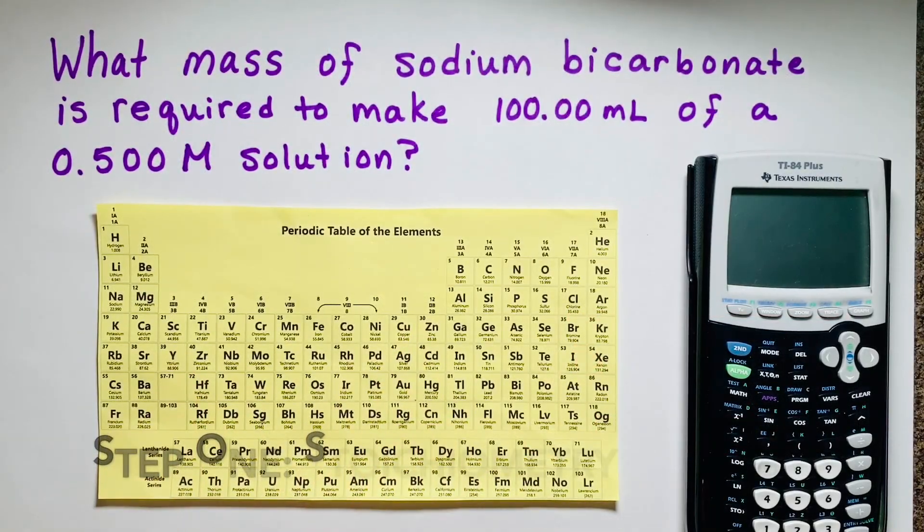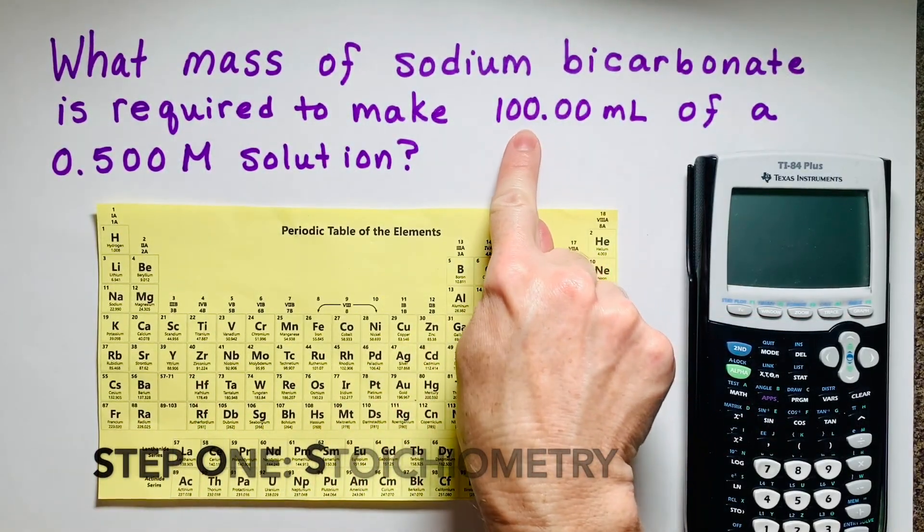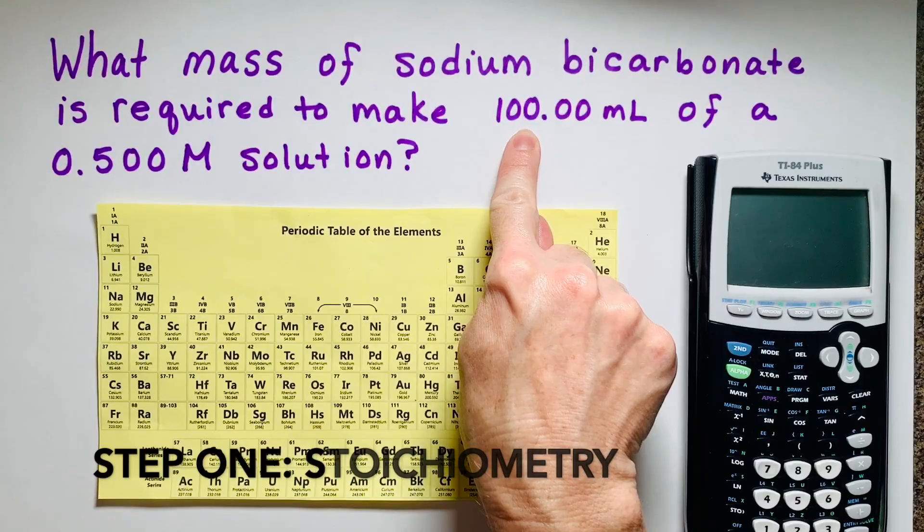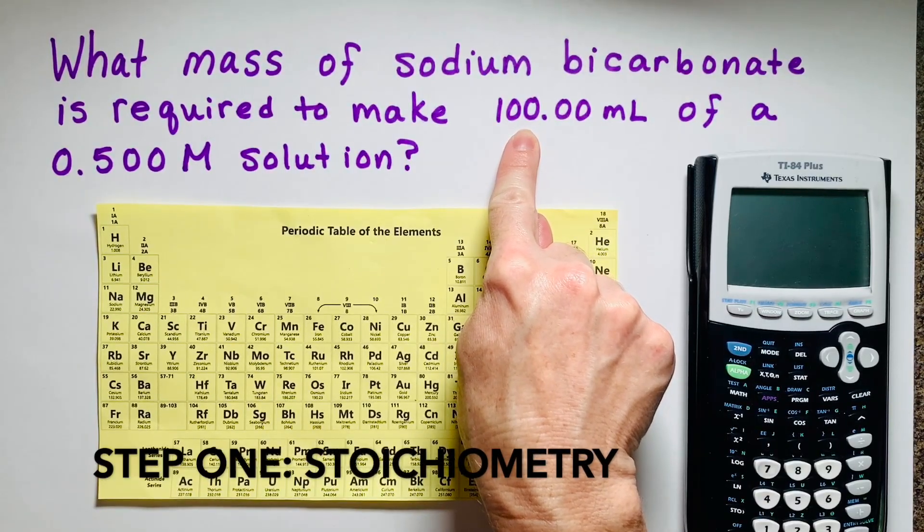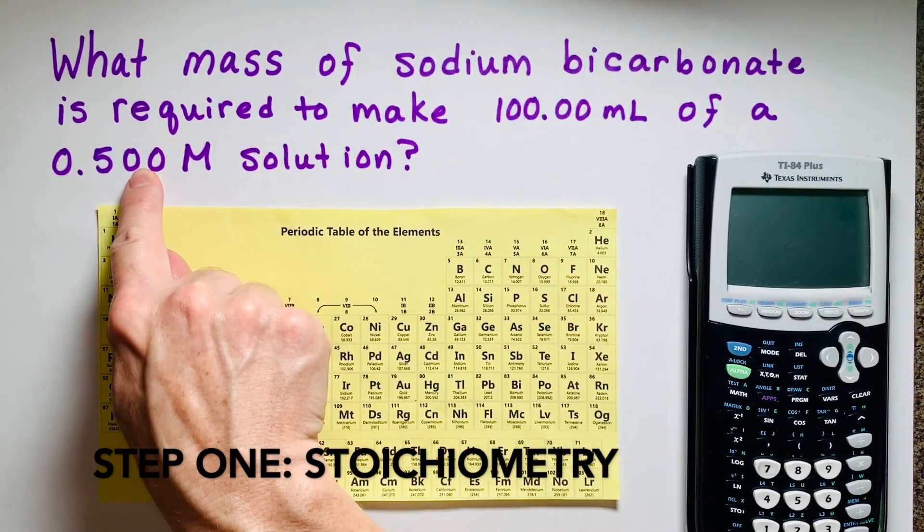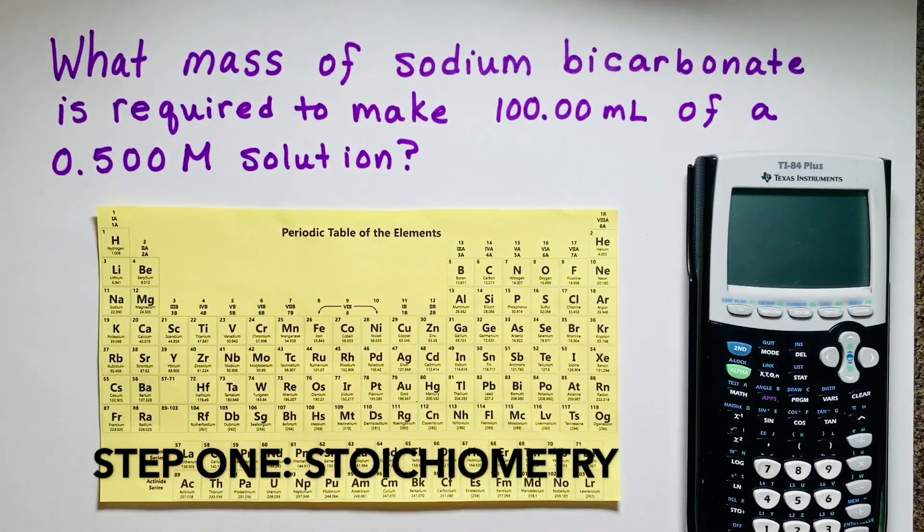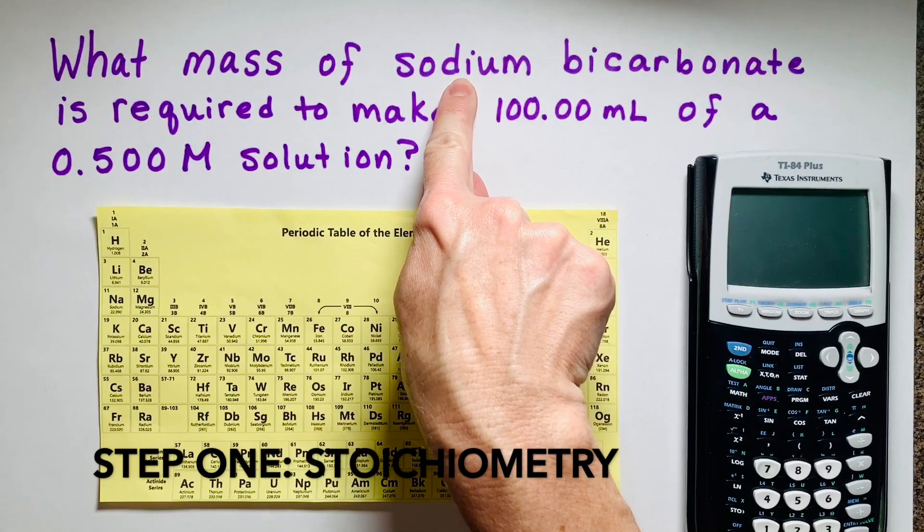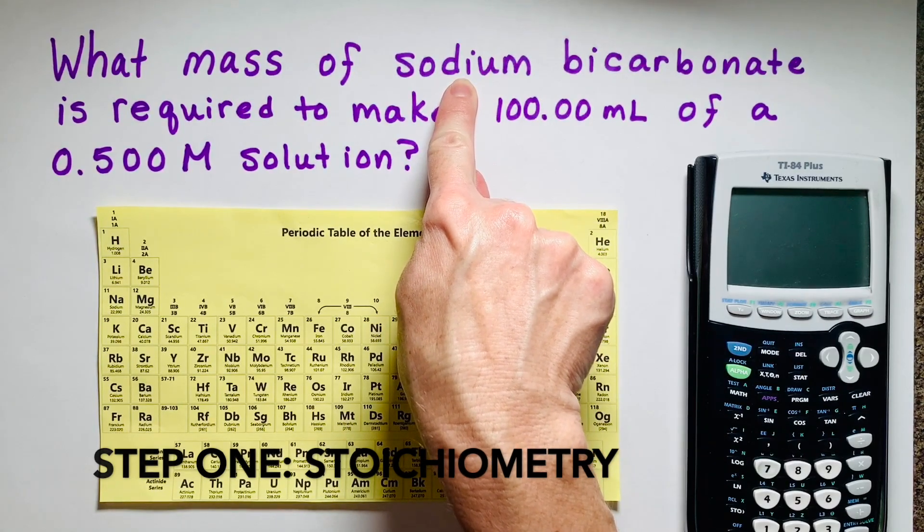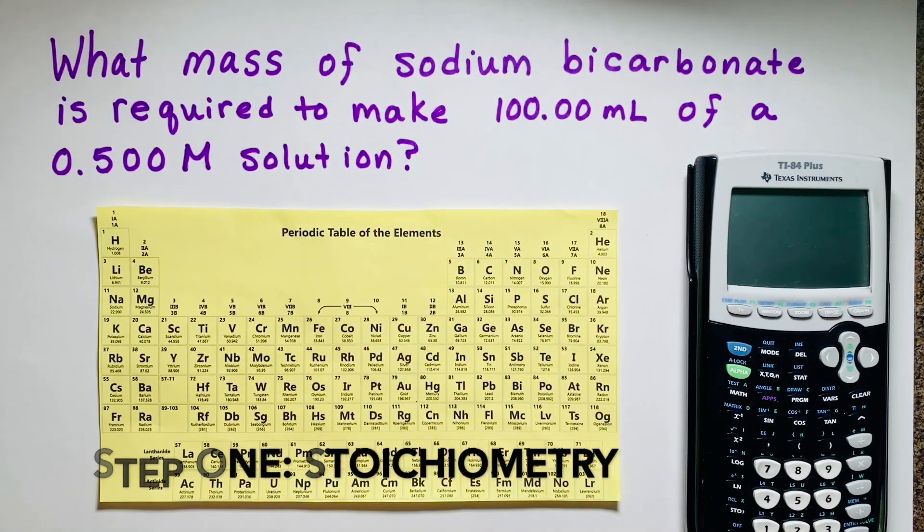The first step to making a solution is finding the volume that you're going to make, in this case 100 milliliters, that's the size of the volumetric flask I'm going to need. What molarity are you going to make? In this case it's 0.500 molar solution. And the identity of the solute, in this case, or your solid, is sodium bicarbonate. So let's get started.